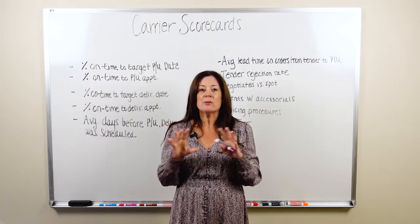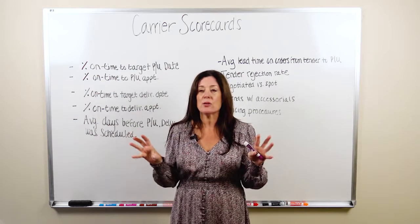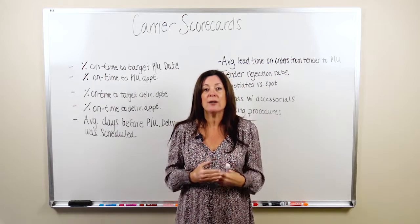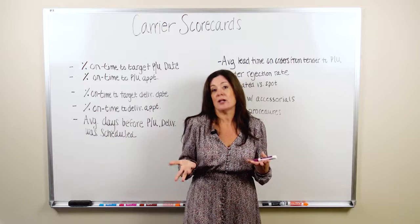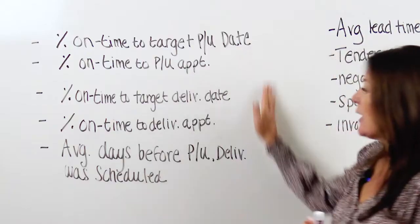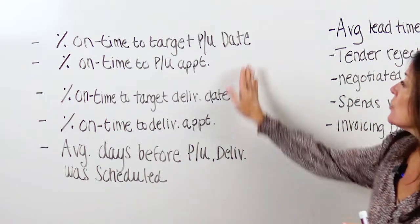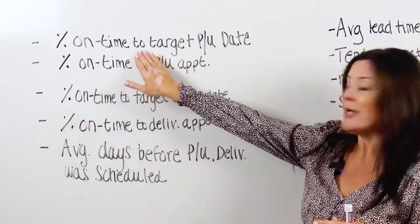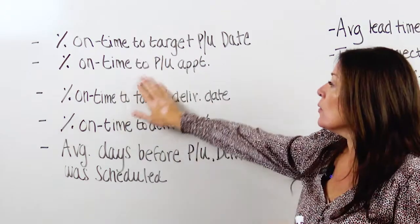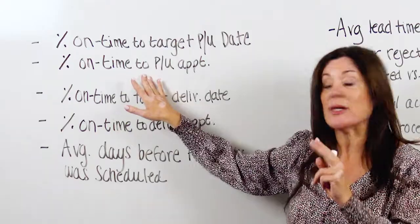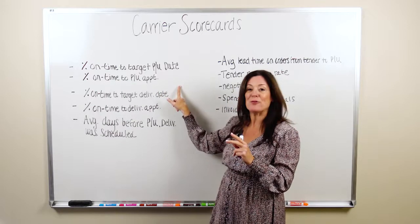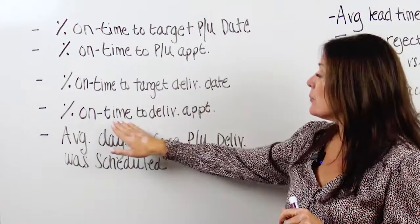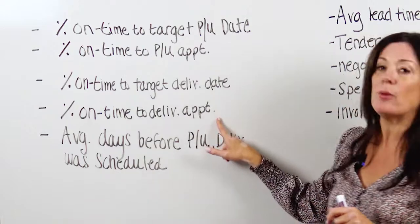We're going to start first with the specifics of the shipment. Because I've always been in operations, when I think about carrier scorecarding, I think about: did you pick up the shipment on time and did you deliver it on time? We measure the percentage of on-time performance to the target pickup date, the percentage on time to the pickup appointment, the percentage to the target deliver date, and the percentage on time against the delivery appointment.